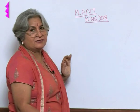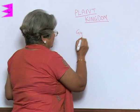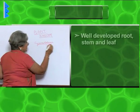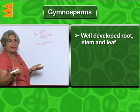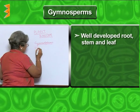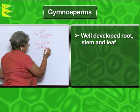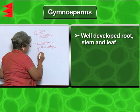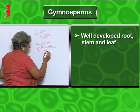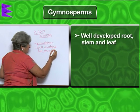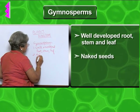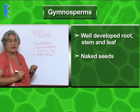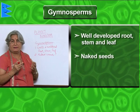In the case of gymnosperms, there are tall trees with very well developed roots, stem, and leaves. They have naked seeds.